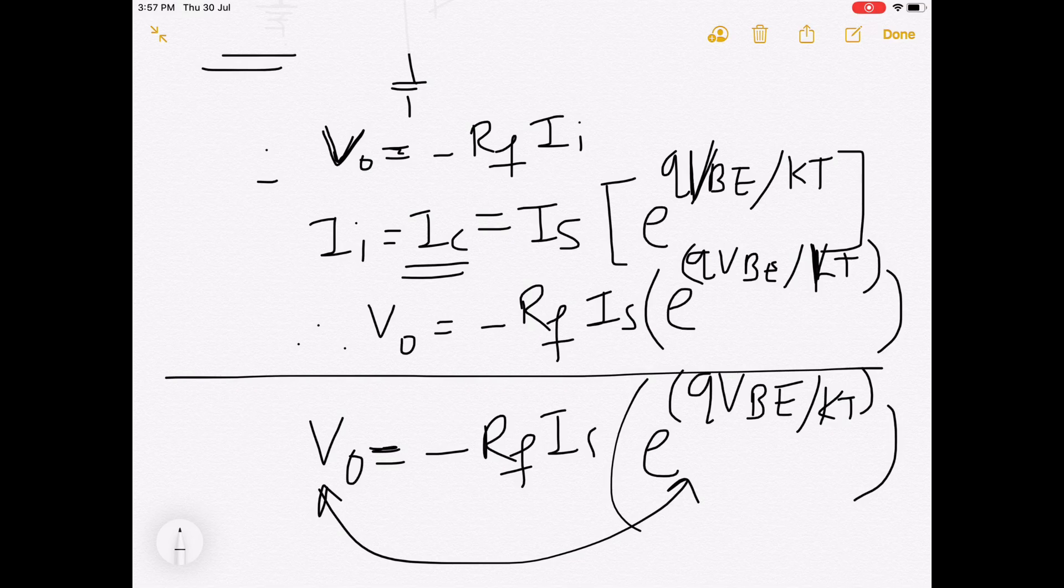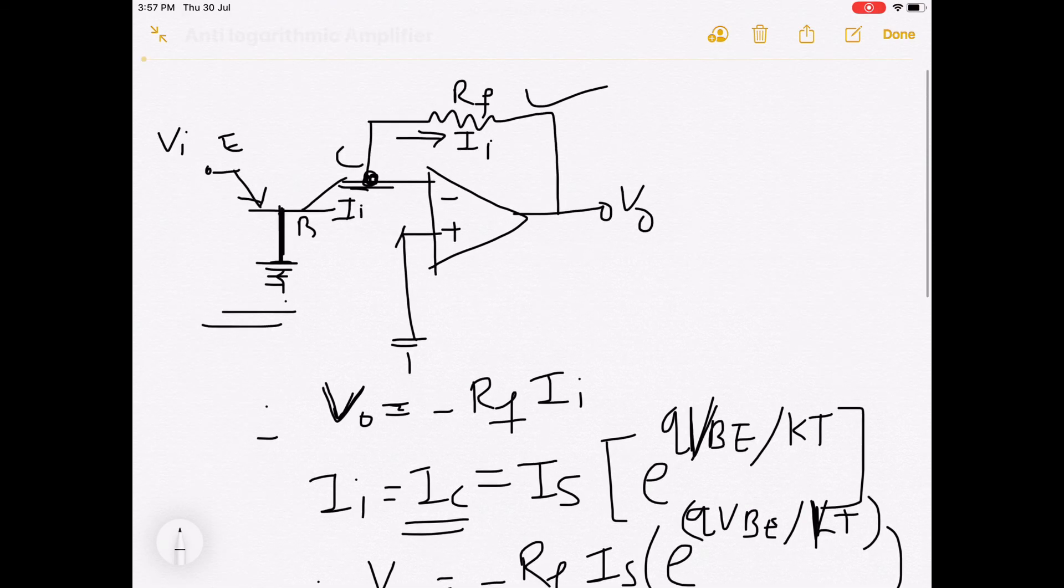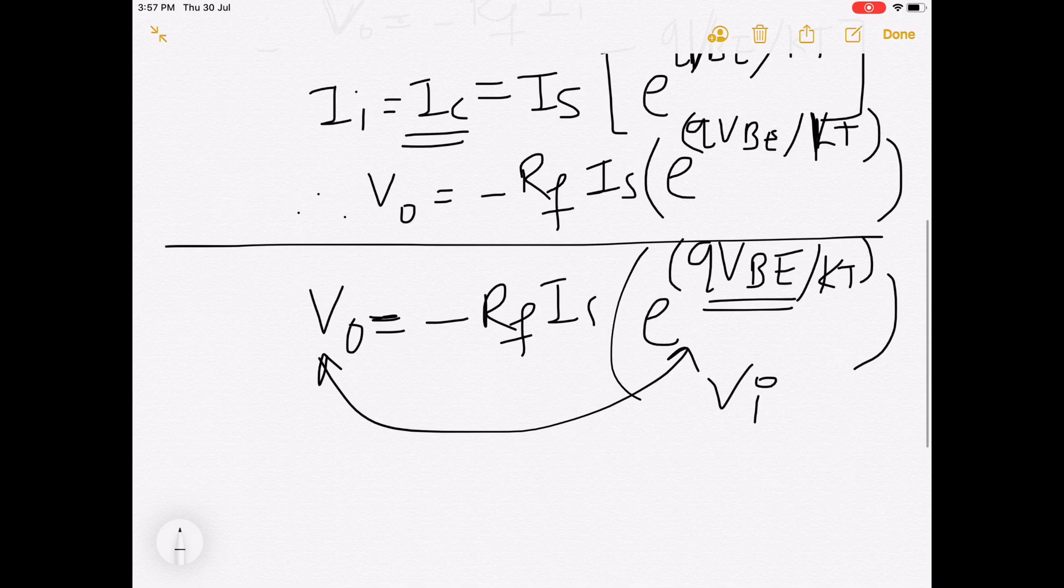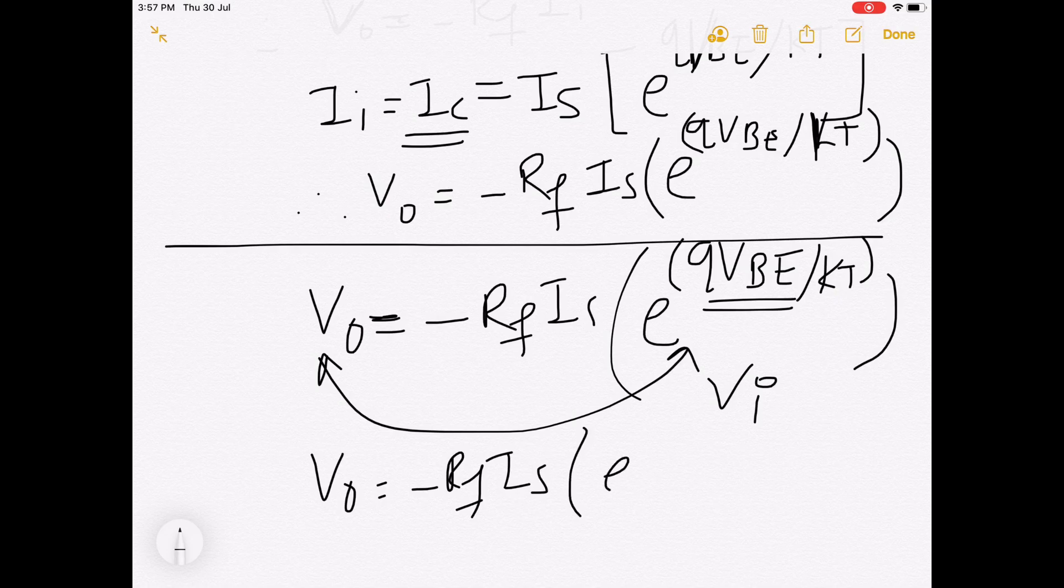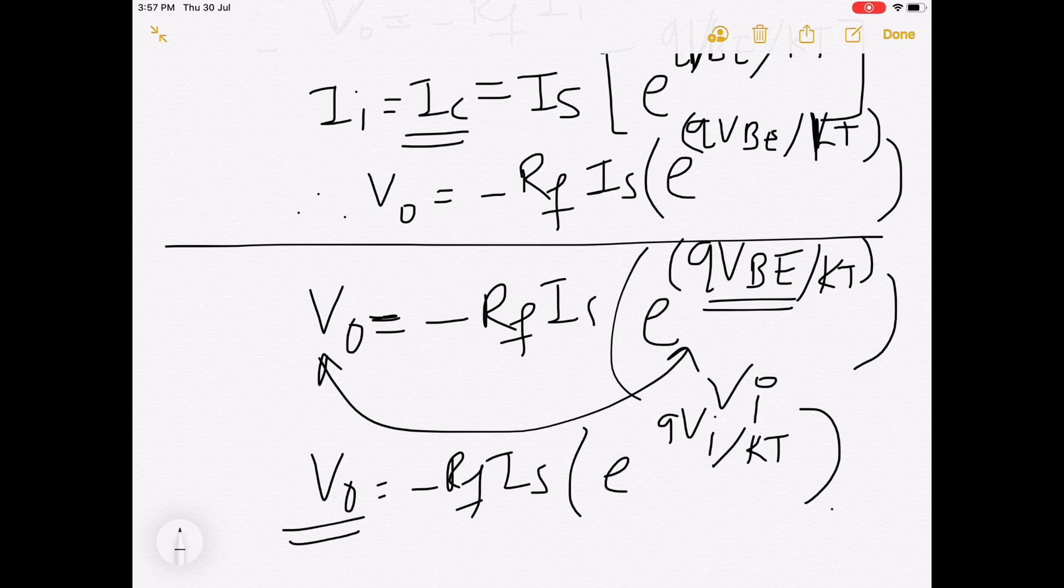Here Vbe is nothing but Vi. Base emitter voltage is Vi. Directly you can write here Vo equals minus Rf into Is times e raised to qVi by kT. In this way it is given that output voltage is anti-log of input voltage.